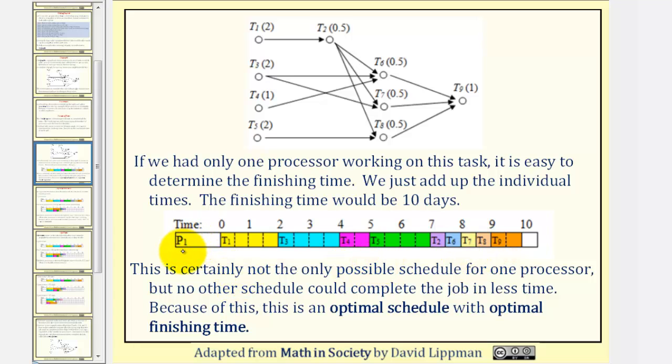Notice how the processor is completing the task in the order: task one, three, four, five, two, six, seven, eight, nine, taking ten days. This is certainly not the only possible schedule for one processor, but no other schedule can complete the job in less time. Because of this, this is an optimal schedule with optimal finishing time. An optimal schedule is the schedule with the shortest possible finishing time.